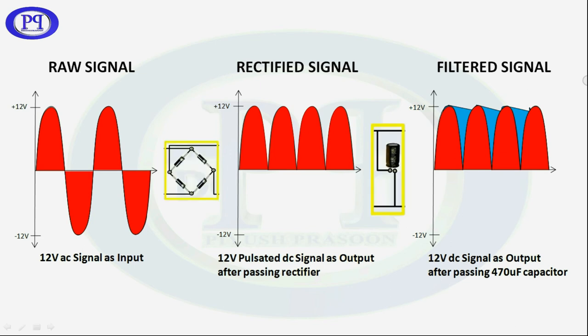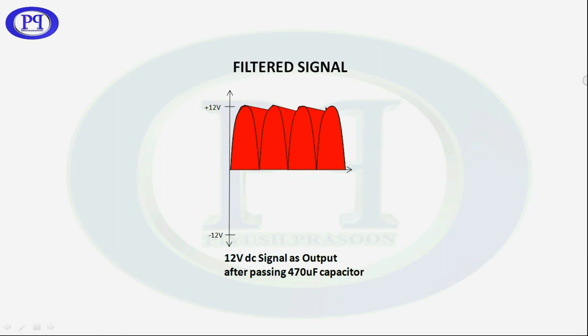So here you can see which signal is acting as an input or output for a particular section in the circuit. Now we will use filtered signal as an input to the stabilizer section.